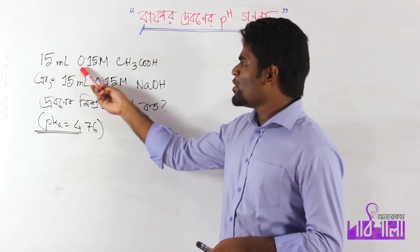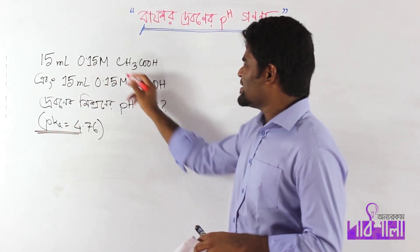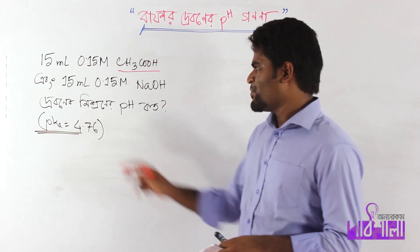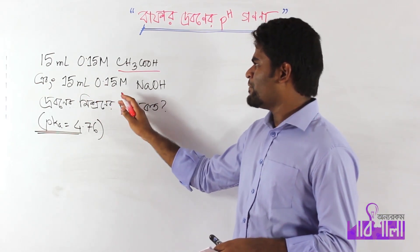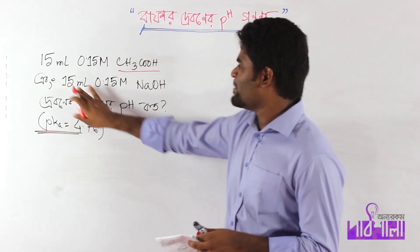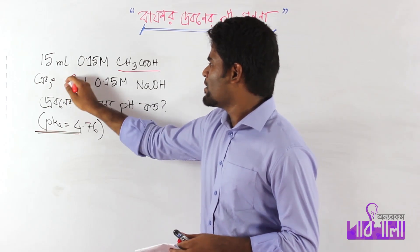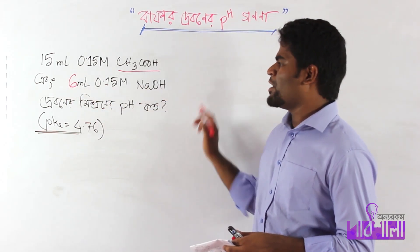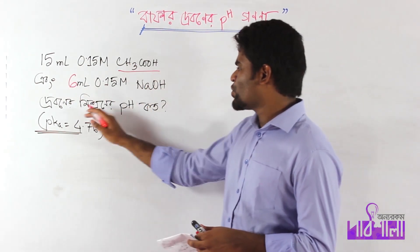15 ml of 0.15 molar acetic acid and 15 ml of 0.15 molar sodium hydroxide. We need to calculate the pH.